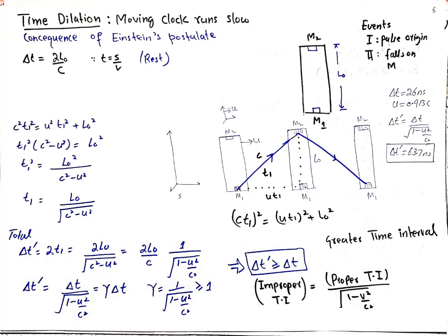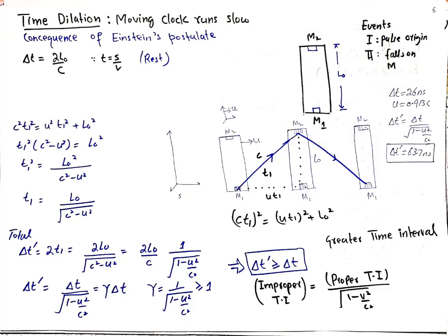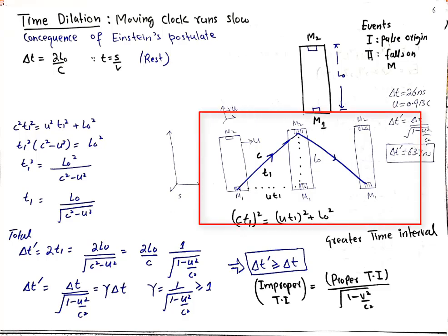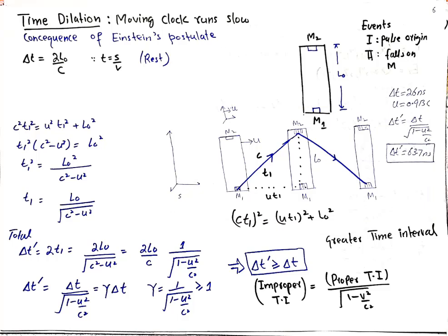We can now define some terms. The frame in which the two events happen at the same location gives us the proper time interval. In this setup, the emission and detection of light happen at the same x, y, z, so delta_t is the proper time interval. The improper time interval is when both events occur at different locations. The proper time interval is the shortest possible time.